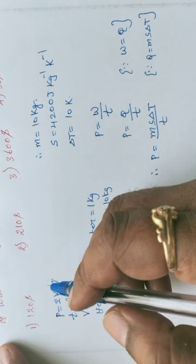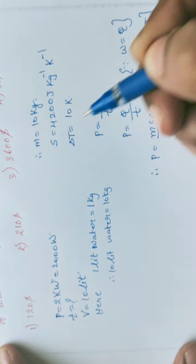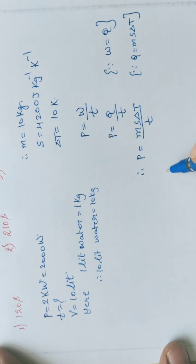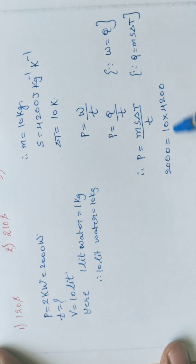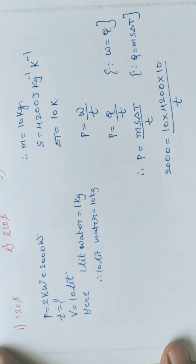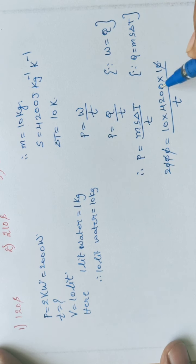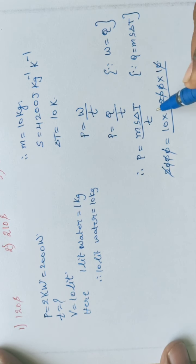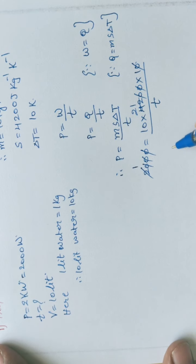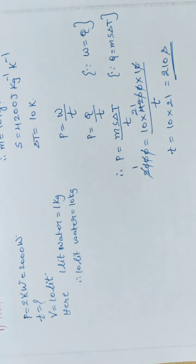Substituting values: power is 2 kilowatts equal to 2000 watts, mass is 10 kg, specific heat is 4200, delta T is 10. Solving for t, after cancellation we get t equal to 10 times 21, which is 210 seconds. So 210 seconds is the time required to heat the given mass of water.